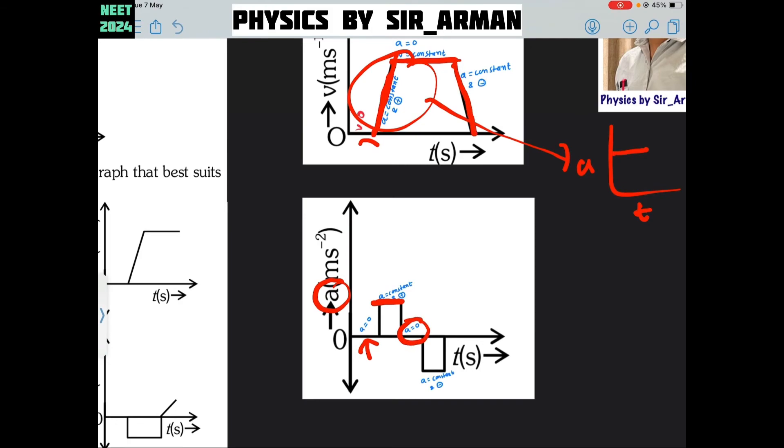Again the speed decreases at a uniform rate. So, acceleration is negative. Here you can see the acceleration is negative and constant. Negative acceleration and constant. For that part it is A and T.